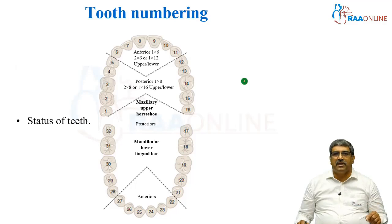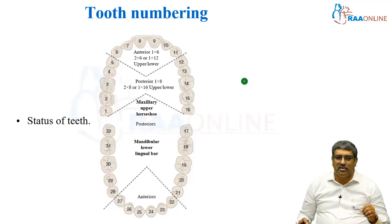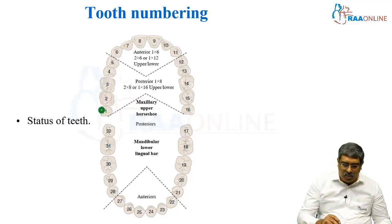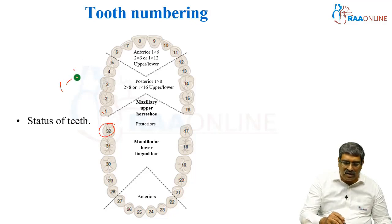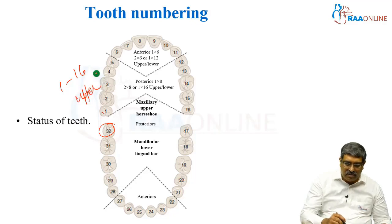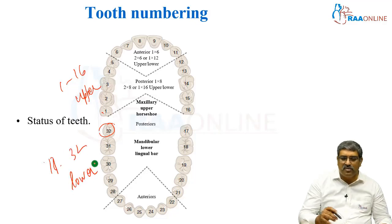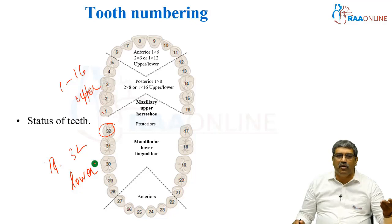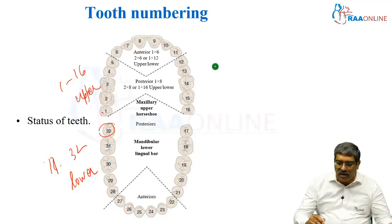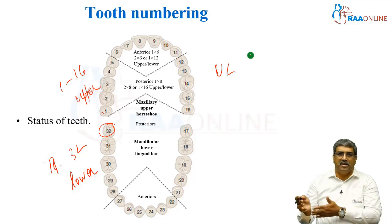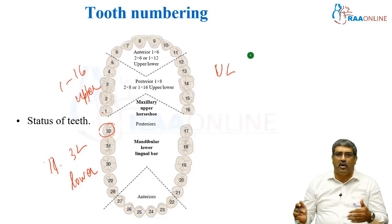Another important thing is you have to number the teeth. You usually number from 1 to 32 — 1 to 16 is for the upper and 17 to 32 is for the lower. So if any tooth is missing, for example if the 4th upper is missing, you have to write upper 4, left or right, and say it is missing. That is very, very important.